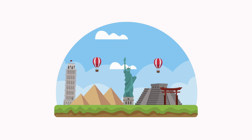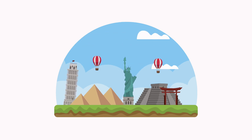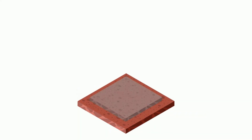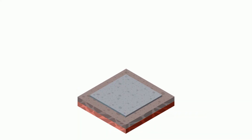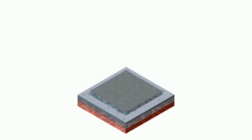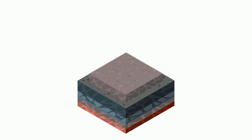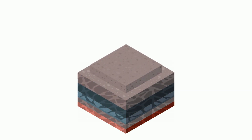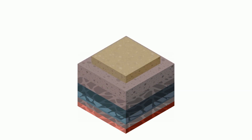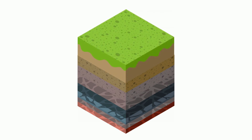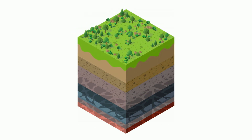But what is soil actually made of? Soil has four major components: air, water, living organisms like bugs, and rock particles. Let's take a closer look at each part that creates soil.